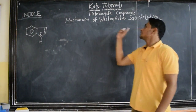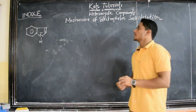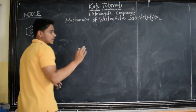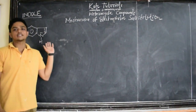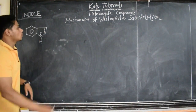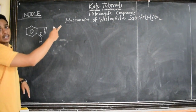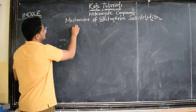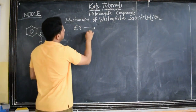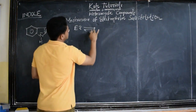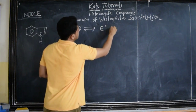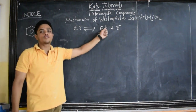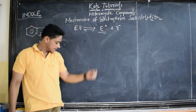I am going to discuss the mechanism of electrophilic substitution reaction in the case of indole. Electrophiles are electron deficient, and we know that indole is electron rich because of pi electron flow. So, these electron deficient electrophiles are going to attack indole. If this is the compound, it undergoes dissociation into E+ and Z−. E+ is nothing but the electrophile — it is deficient of electrons, so it carries a positive charge.